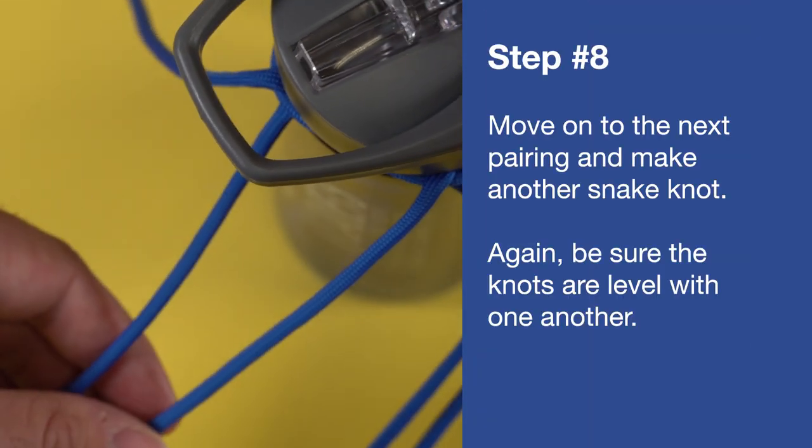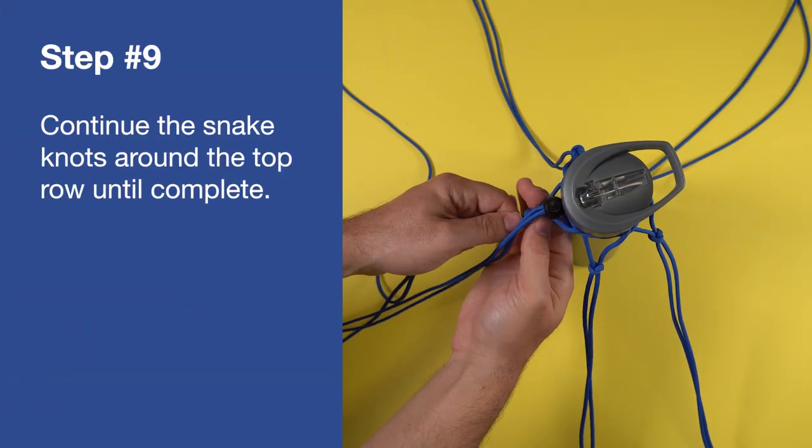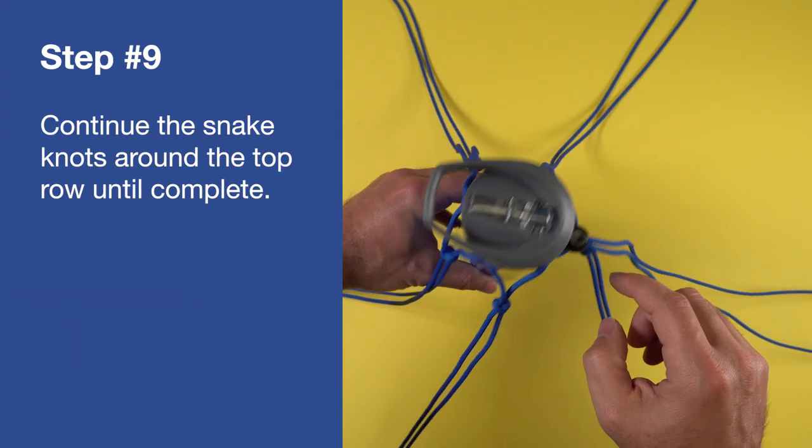Move on to the next pairing and make another snake knot. Again, be sure the knots are level with one another. Continue the snake knots around the top row until complete.